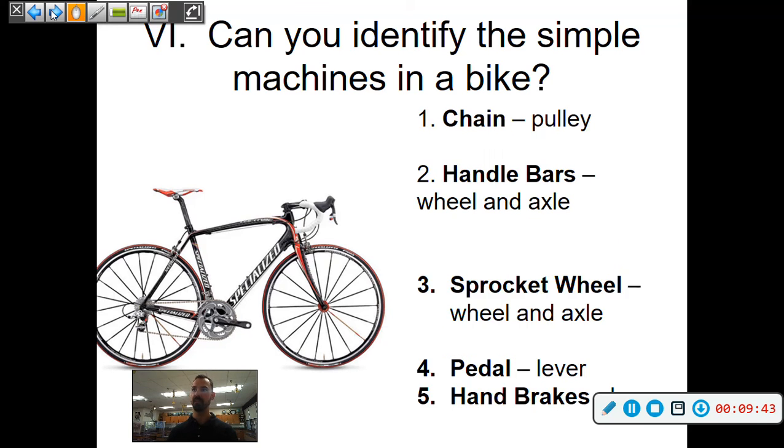So the chain acts as a pulley. You can see the wheel and the pulley system. Handlebars are a wheel and axle as I mentioned. So here's your axle, here's your wheel that rotates.